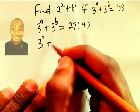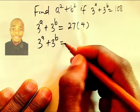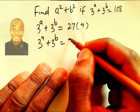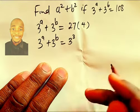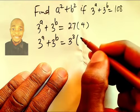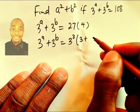From there, we have 3^a + 3^b equals to... we can write this 27 as what? 3³, because when 3 multiplies itself 3 times, we're going to have 27. And this 4 inside, I can split it to be 3 plus 1.